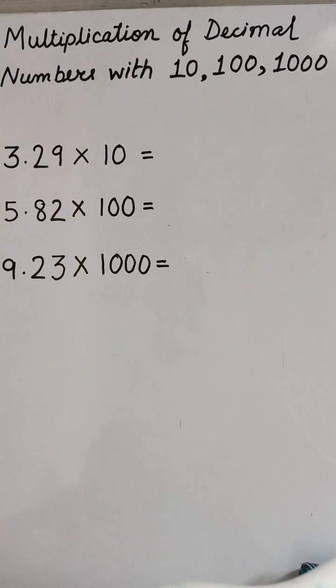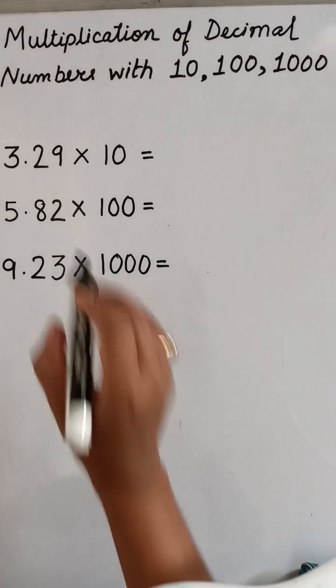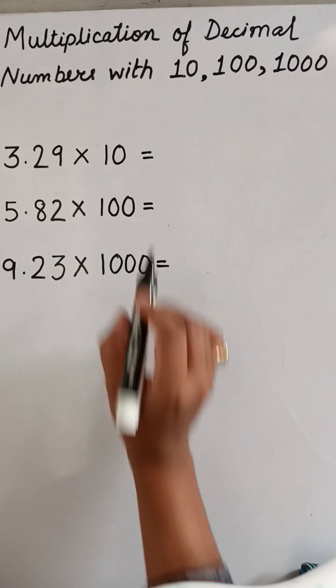Hello everyone. Today we will learn about the multiplication of decimal numbers with 10, 100, 1000, and so on. The first sum we have is 3.29 × 10. So how to multiply? First, look at the number of zeros this 10 has.